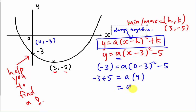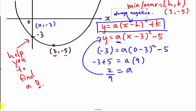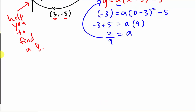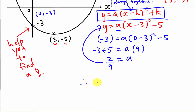So a = 2/9. Substituting back into the equation gives the final equation of the curve: y = (2/9)(x − 3)² − 5.